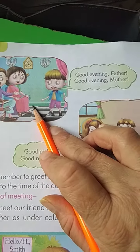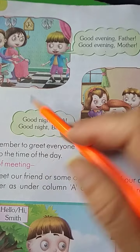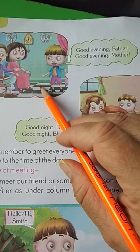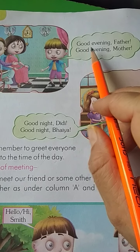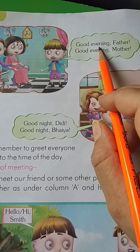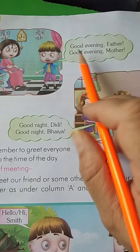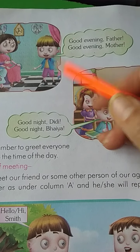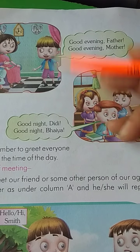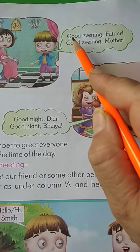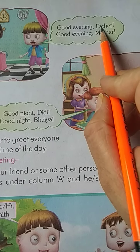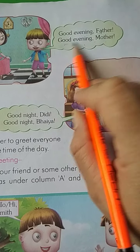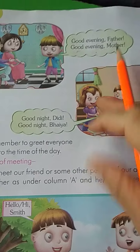Then, evening time. Evening time — शाम को 5 o'clock के बाद का time जो आता है — उसमें आप क्या विश करते हो? Good evening. जब आप बाहर से आते हो, school से या खेल के आते हो — Good evening, father. Good evening, mother.